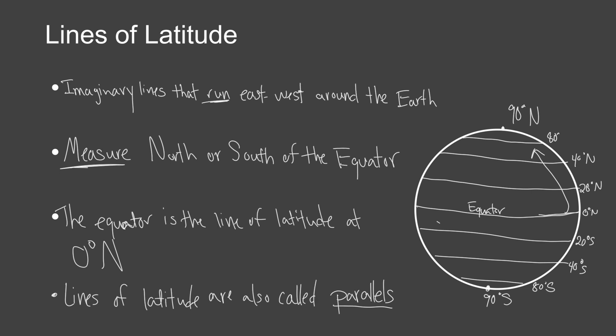So again, these lines of latitude run east to west. As you draw them, the lines run east to west across the globe, but they measure how far above or below the equator we are — north or south. As we go further north or south, the latitude numbers get larger. That is our lines of latitude.